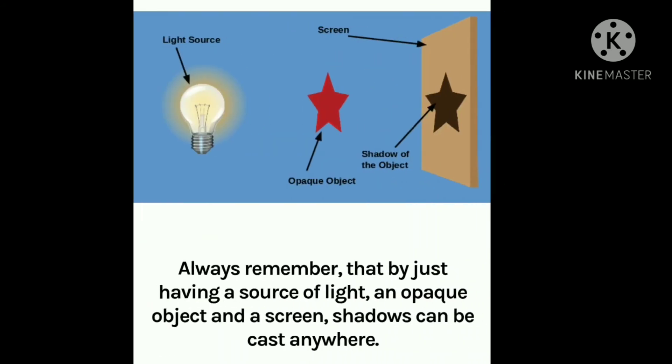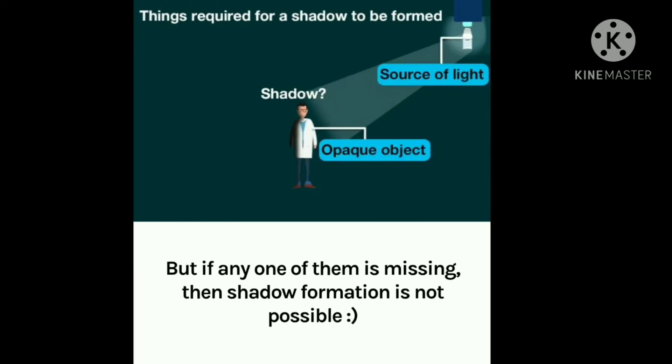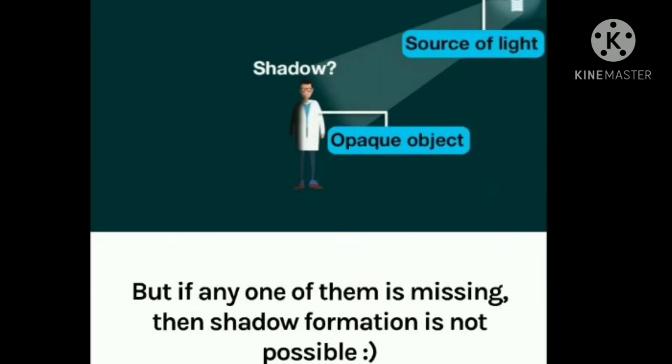So always remember that by just having a source of light, an opaque object and a screen, shadows can be cast anywhere. But if any one of them is missing, then shadow formation is not possible.